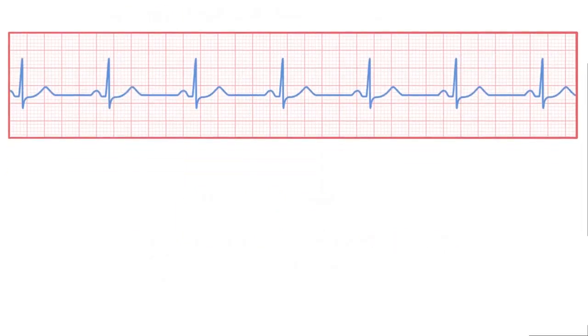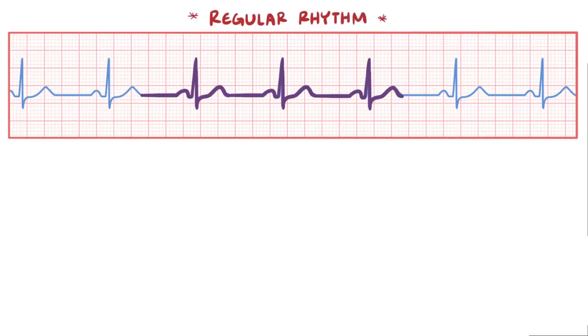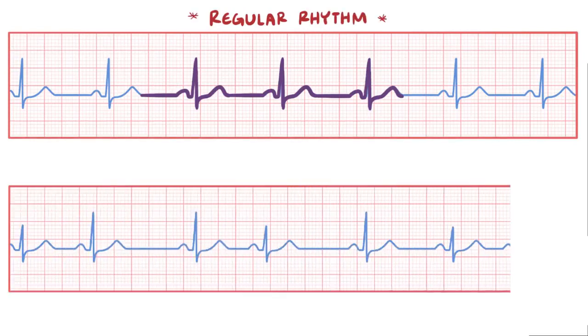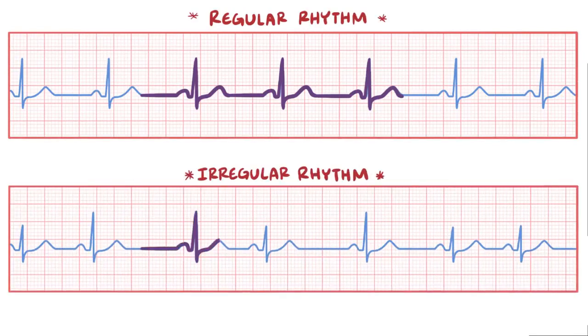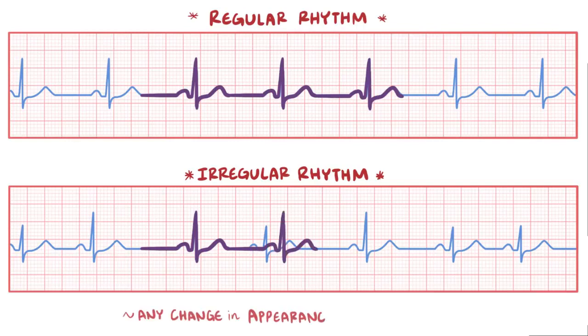Normally, on an ECG, one waveform with its P wave, QRS complex, and T wave looks just like the next one, almost like they were just copied and pasted one right after another. And that's how a regular rhythm looks. An irregular rhythm, on the other hand, is when there's any change in the appearance, sequence, or timing of those waves.